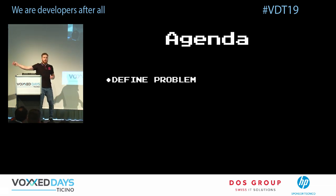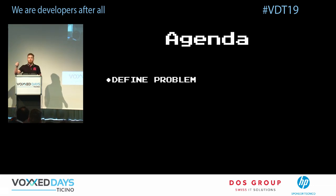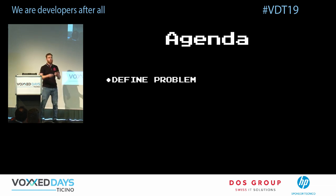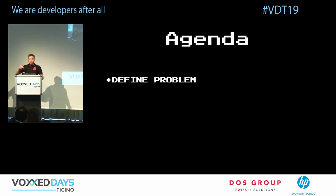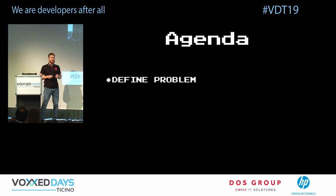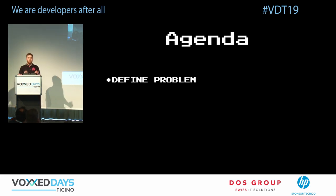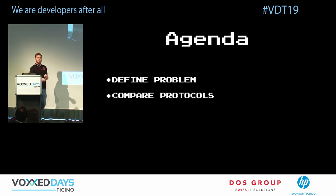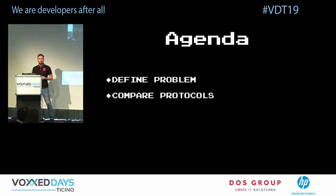Even if we push the performance of every component to the maximum and utilize our CPU really well, we'll still have the problem of communication. If communication is slow, we won't benefit from application performance. That's why we're going to look at network protocols and compare different ones throughout the session.